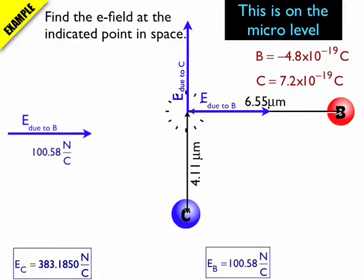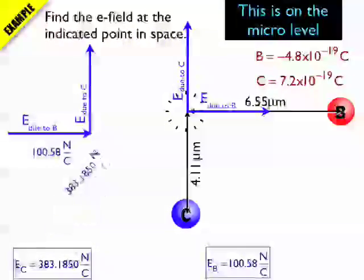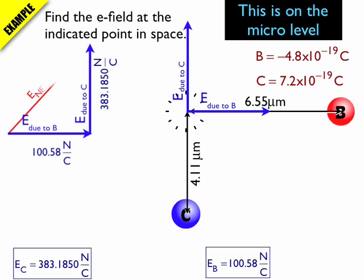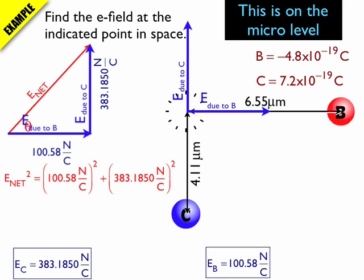My hypotenuse is my net electric field and the angle is the angle down there by the tails of the vectors. So I use a little bit of geometry with Pythagorean's Theorem to find the net electric field. And then I use a little bit of trig with a tangent to find the angle.